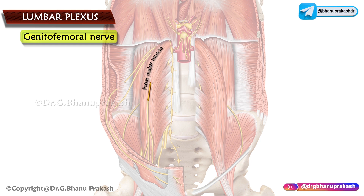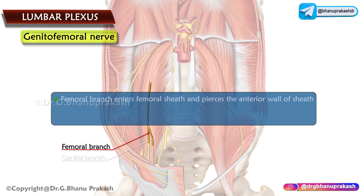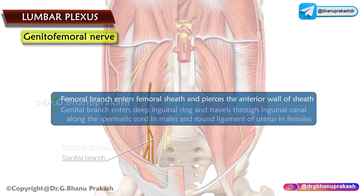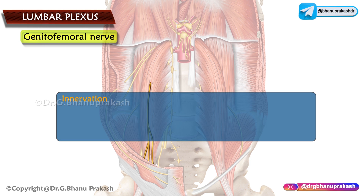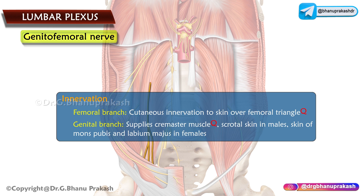The genitofemoral nerve passes forwards through the psoas, piercing it, and runs on the anterior surface of the psoas above the inguinal ligament. It divides into genital and femoral branches. The femoral branch enters the femoral sheath and pierces the anterior wall of the sheath. The genital branch enters the deep inguinal ring and travels through the inguinal canal along the spermatic cord in males and the round ligament of the uterus in females. The femoral branch provides cutaneous innervation to the skin over the femoral triangle, while the genital branch supplies the cremaster muscle and scrotal skin in males, and mons pubis and labia majora in females.